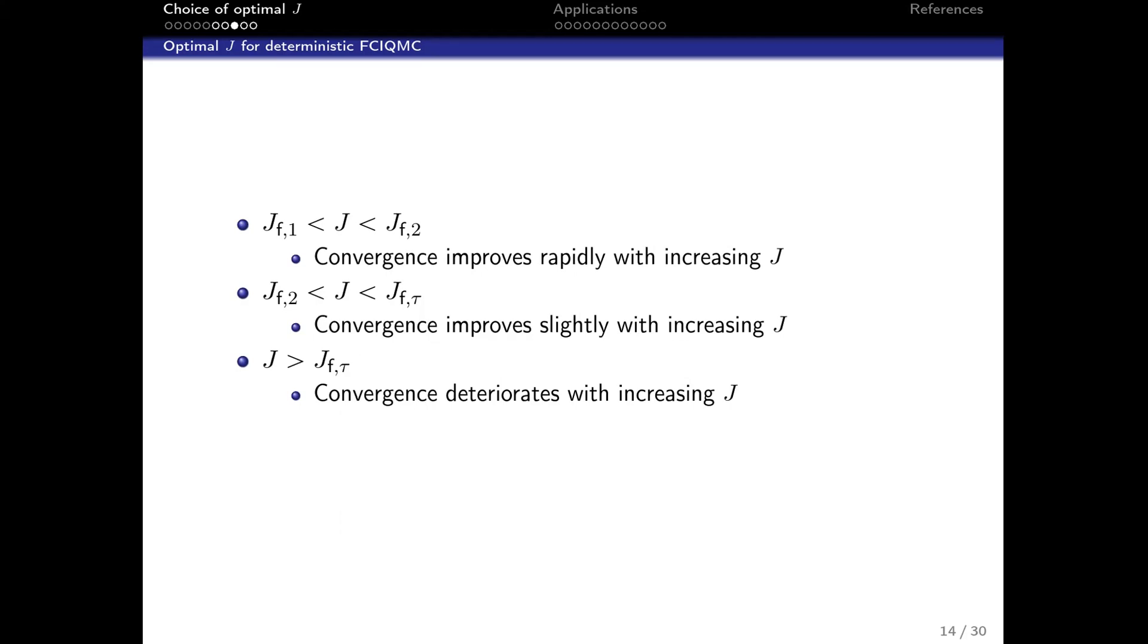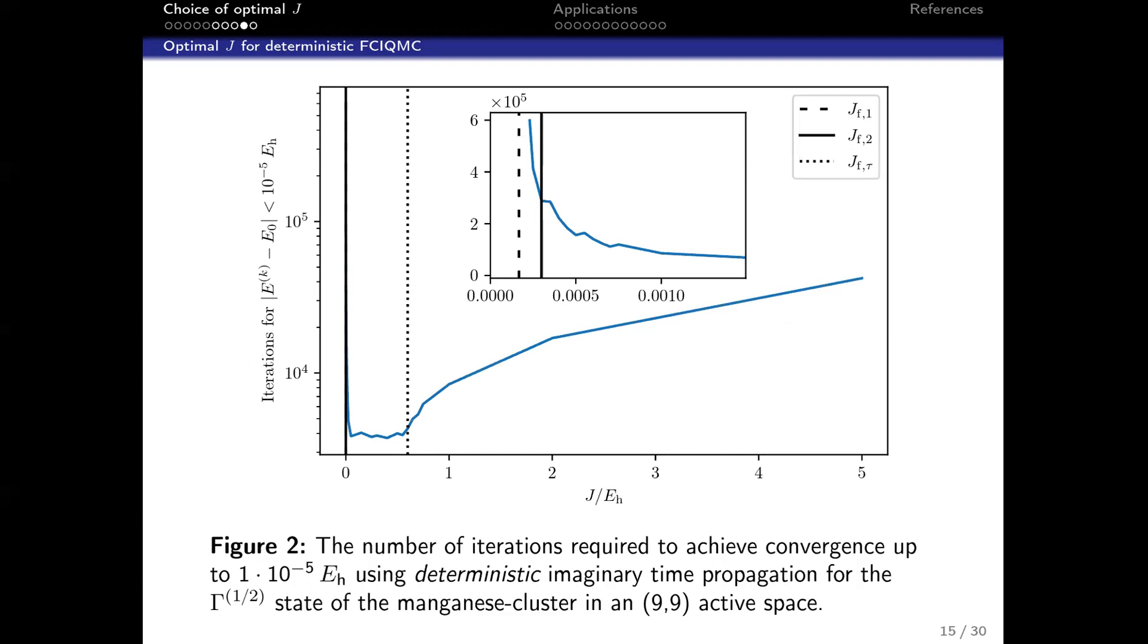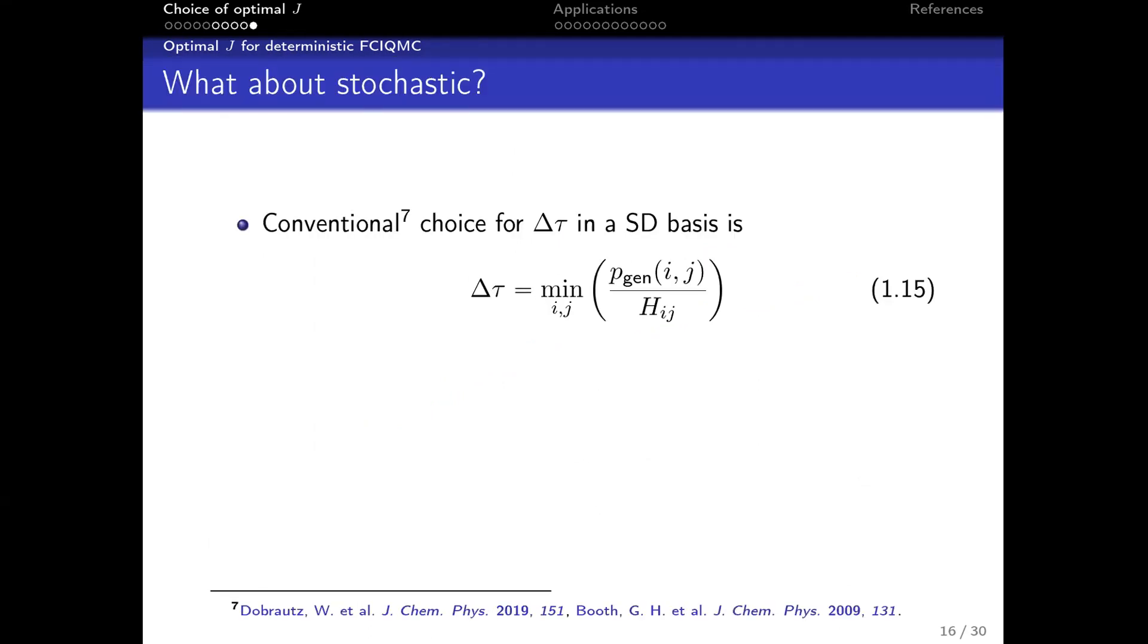To summarize: between the first and second flipping point you get great improvement of convergence with increasing J. Between the second and tau flipping point you're at the plateau with slight improvement. For J larger than the tau flipping point, convergence deteriorates with increasing J. If you do the math, it's better to overshoot than to undershoot. We can prove this numerically: here you have the 9×9 active space and convergence speed against J, showing the first and second flipping point and tau flipping point.